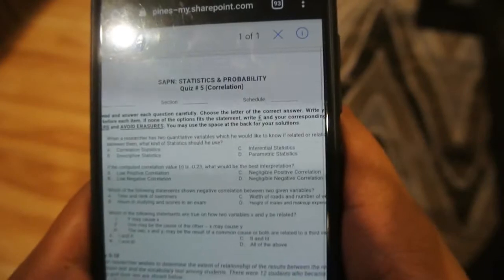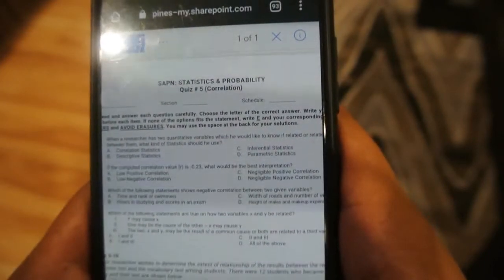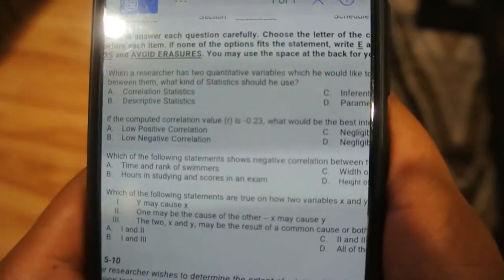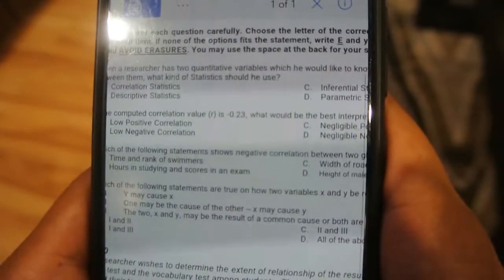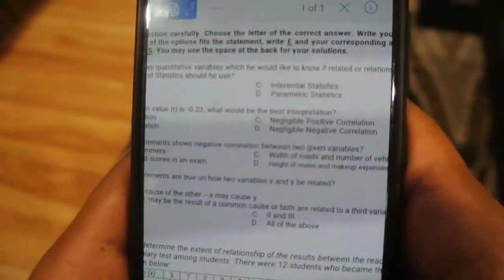Ano sa'yo? C oh C. C or B? Sa akin... Ano sa'yo Jansen? C din. O C na lang. S kami, letter C.